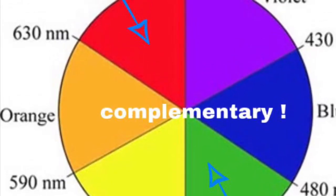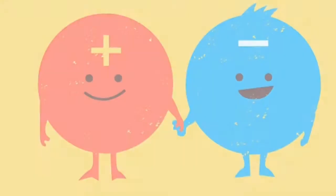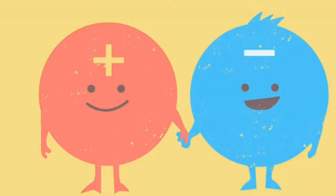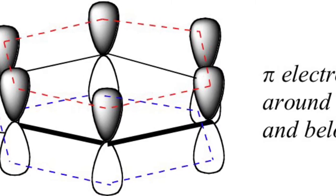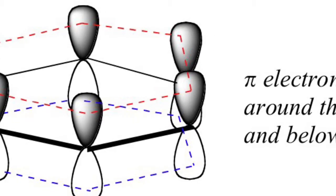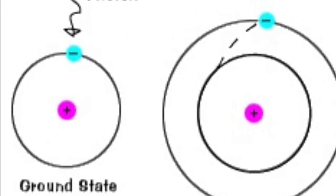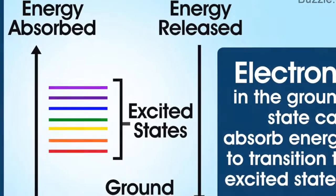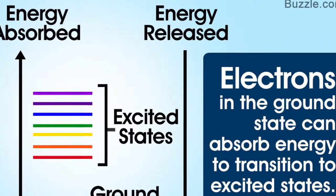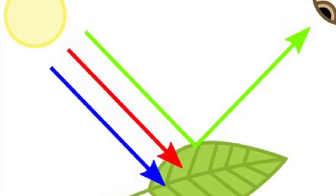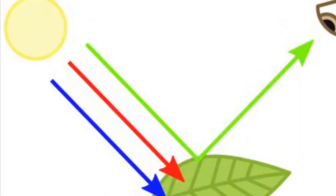These pigments absorb light due to their chemical bonds. They're highly conjugated, meaning their electrons and orbitals are delocalized. So these loosely held electrons can become excited and absorb certain wavelengths of energy. The molecule responsible for absorbing radiation is called the chromophore.